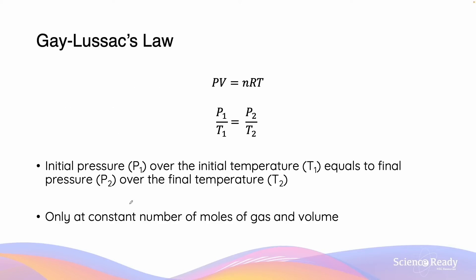We can derive Gay-Lussac's law by observing the ideal gas formula PV = nRT, where P is pressure, V is volume, n is amount, R is the universal gas constant, and T is temperature. If we keep all the other variables the same — V, n, and R — then if P is increased, T must be increased proportionally by the same amount.